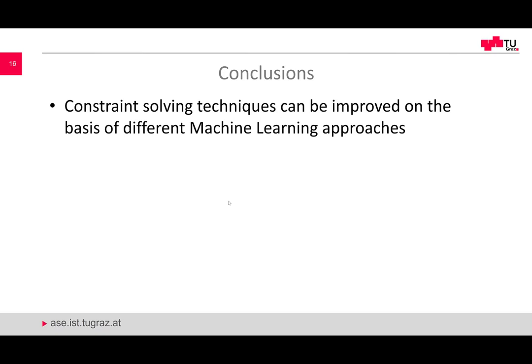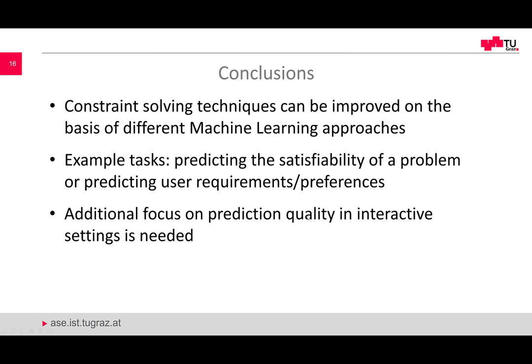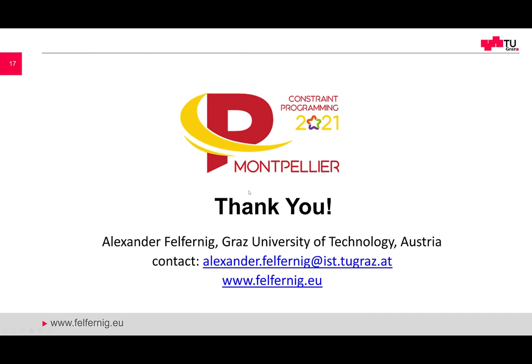To conclude this talk: it becomes obvious that machine learning helps to improve constraint solving in various aspects. In this talk we discussed example tasks such as predicting satisfiability or predicting relevant user requirements and preferences. An outcome of our literature analysis is that additional focus on prediction quality, especially in interactive settings, is needed — we need recommendation functionality in the context of constraint solving. There are many open research issues in this highly interdisciplinary area. Thank you very much, and I'm hoping to be able to answer your questions.